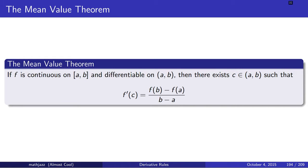The mean value theorem states that if f is continuous on the closed interval from a to b and differentiable on the open interval from a to b, then there exists some point c between a and b such that f prime of c is equal to f of b minus f of a divided by b minus a.